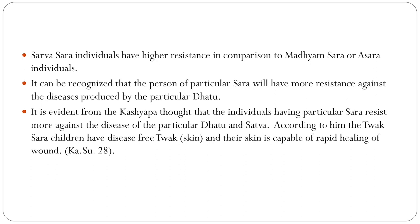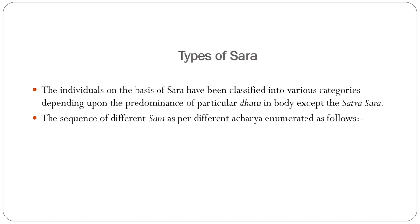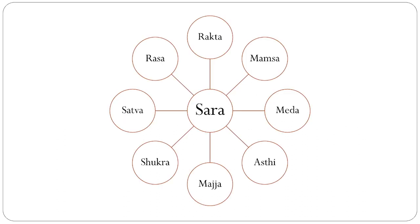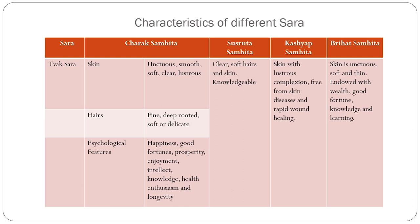According to evidence given by Acharya Kashyap, the individual having a particular Sara resists more against diseases of that particular Dhatu. According to him, the Tvak-Sara individuals are disease-free from skin conditions and their skin is capable of rapid wound healing. The types of Sara in Ayurveda — Ashtavid Sara — are mentioned as Rasa, Rakta, Mansa, Meda, Asthi, Majja, Shukra, and Sattva Sara. Acharya has discussed both physical and psychological characteristics of individuals for each Sara.